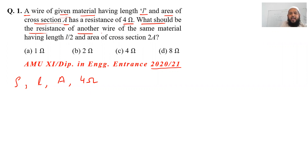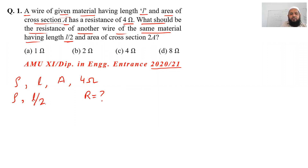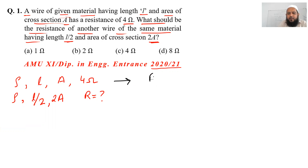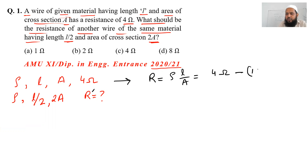What should be the resistance of another wire of the same material — meaning rho (ρ) remains the same? We need to find the value of R'. Using the first wire: R = ρL/A = 4 ohms. This is equation one.